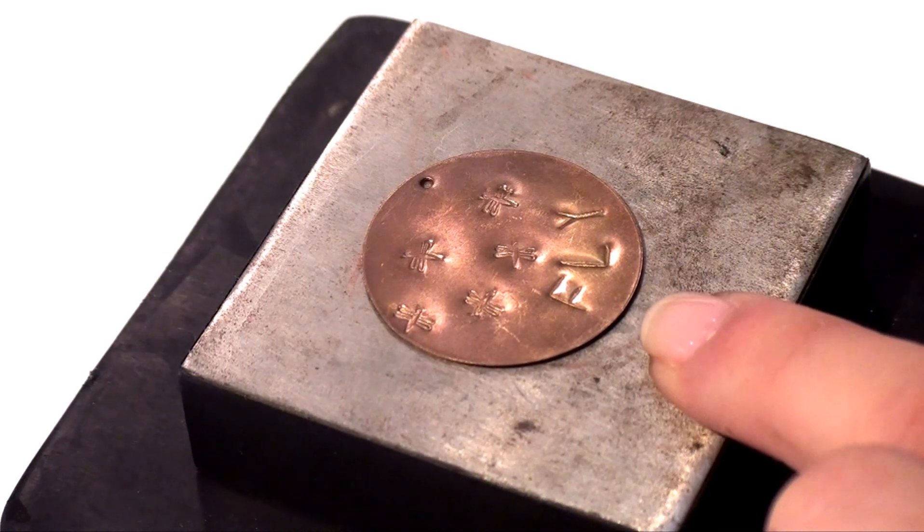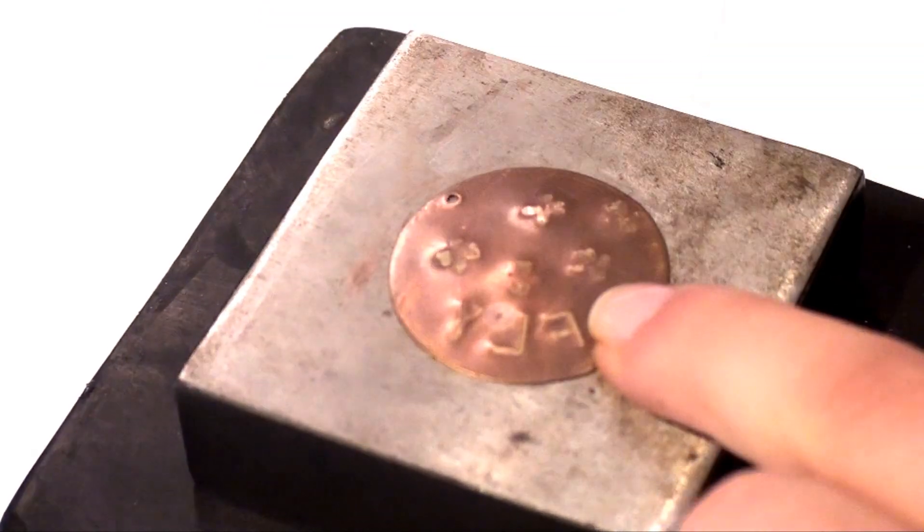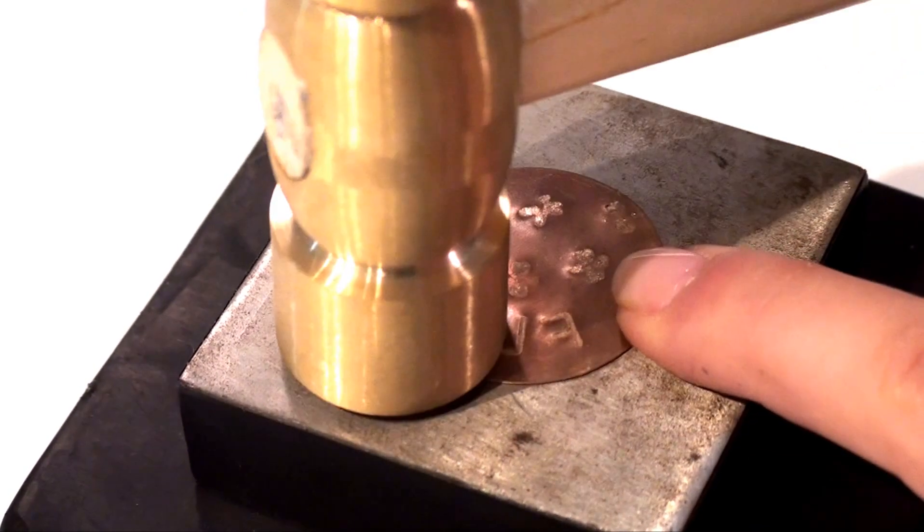Now that I have all my imprinting complete, I'm going to turn over the altered blank. If you see any dents, you can flatten them out by just hammering around the edges here.